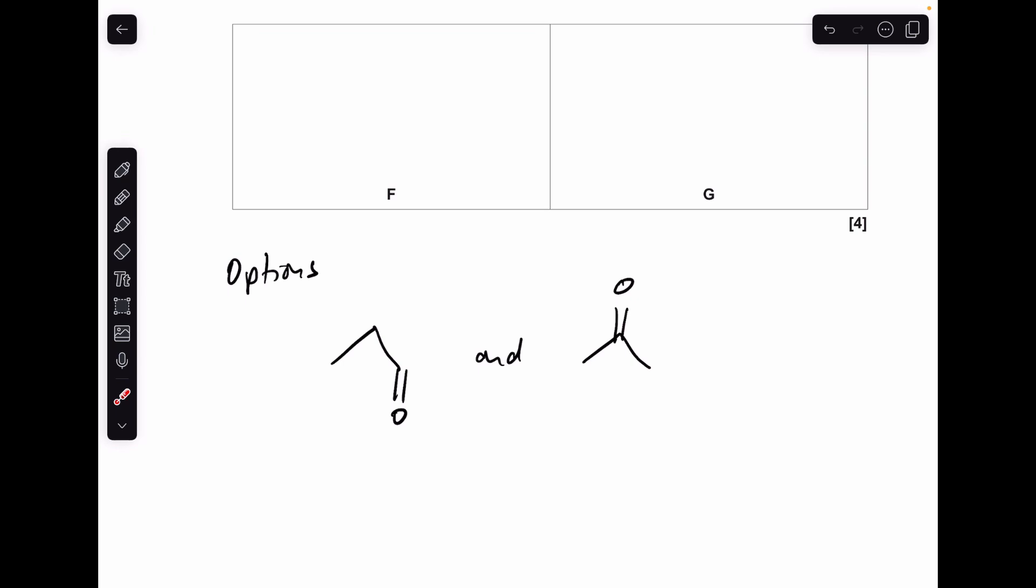So if we think about what options we've got, we know that they're both carbonyl compounds so the only two that work are propanal and propanone. So all we're going to do now is go back to the mass spectra and find evidence for which one's F and which one's G.